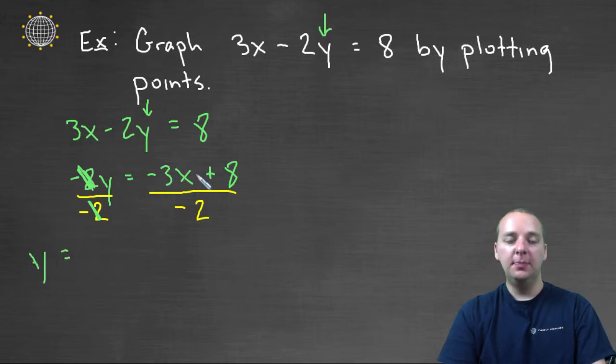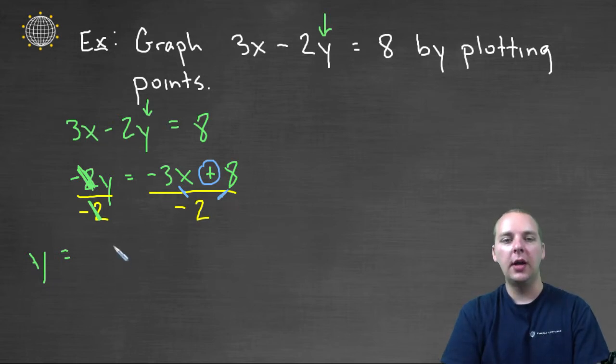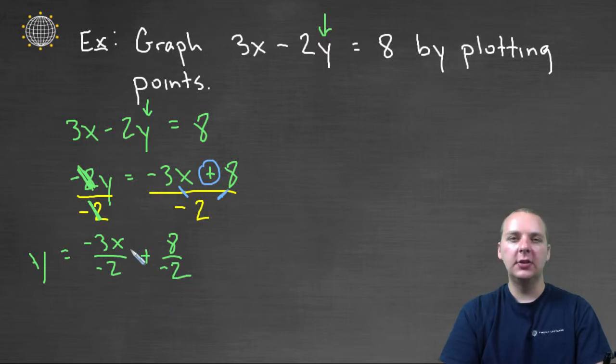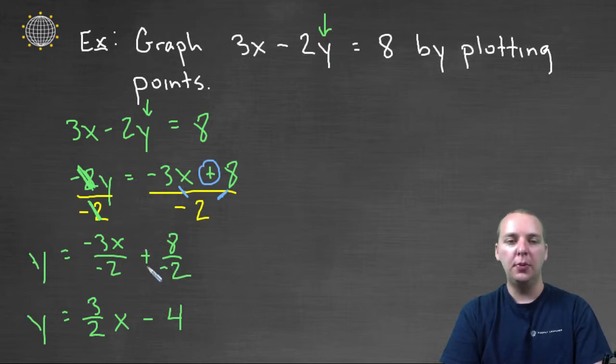Now one thing I notice is because there's addition in the numerator, and we're dividing by only a single term, we can actually break this apart into two separate fractions, which will probably look a lot better. So we'll take negative 3x divided by negative 2, plus 8 divided by negative 2. And that just looks a little bit cleaner. Now I do see one last thing I think we can do as well. These negatives, the negative 3x divided by negative 2, those negatives will cancel, and we'll get 3 halves x. And then minus 8 divided by 2, which is 4. This minus will get pulled out in front of the fraction, and become a minus 8 divided by 2, which is 4.